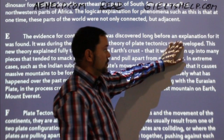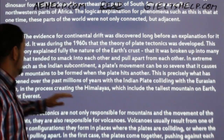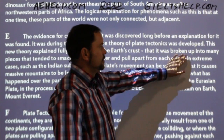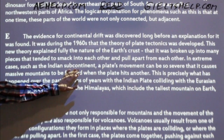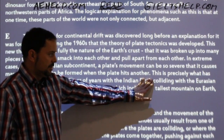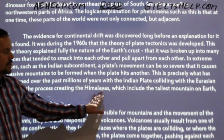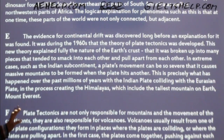Paragraph E: 'The evidence for continental drift was discovered long before an explanation for it was found. It was during the 1960s that the theory of plate tectonics was developed. This new theory explained fully the nature of the Earth's crust — that it was broken up into many pieces that tended to smack into each other and pull apart. In extreme cases, such as the Indian subcontinent, a plate's movement can be so severe that it causes massive mountains to form when the plate hits another. This is precisely what happened with the Indian plate colliding with the Eurasian plate, creating the Himalayas — which include the tallest mountain on Earth, Mount Everest.'